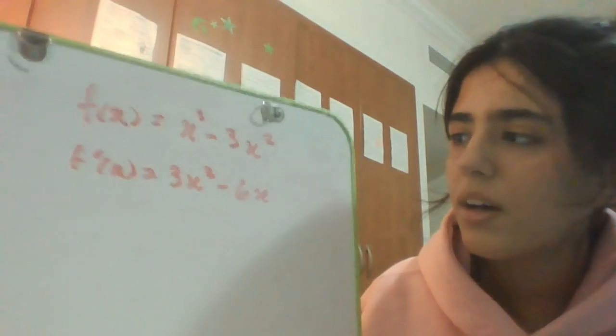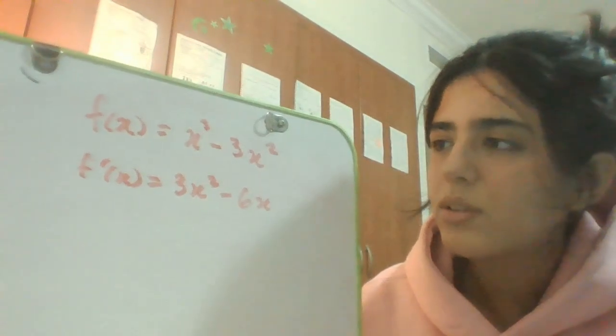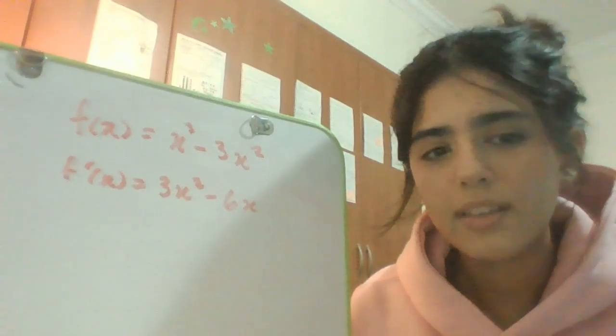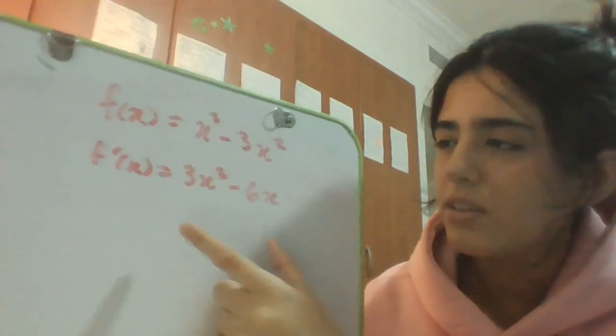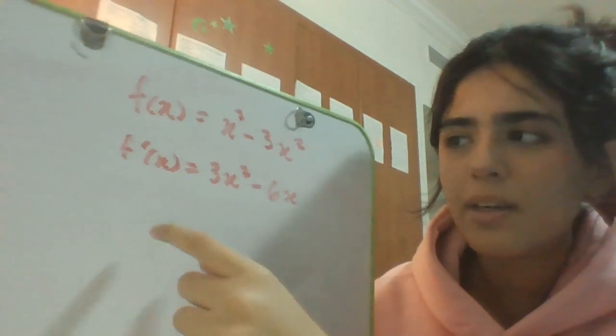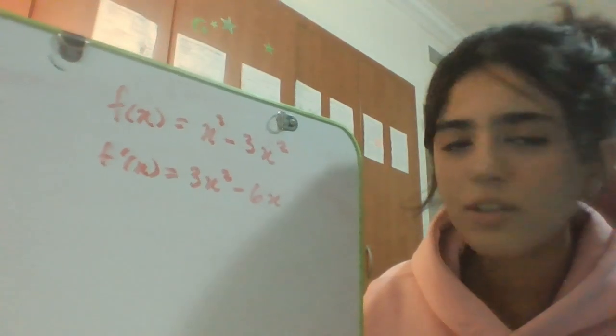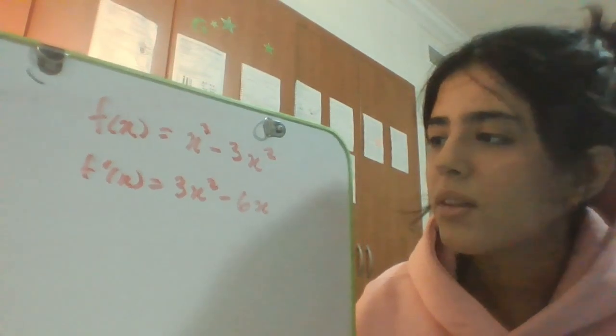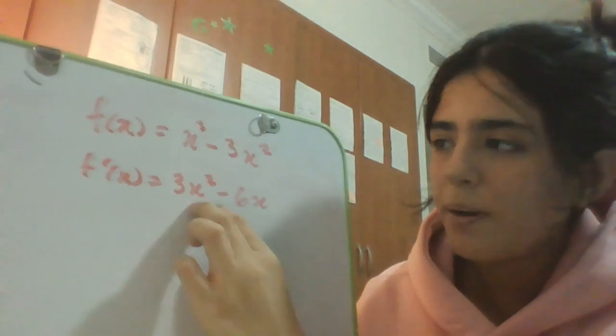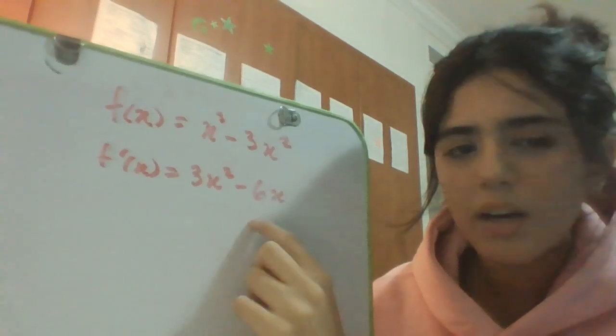Now that I wrote the derivative, I think an easier way for you guys to understand would be to try to factor it and then make it equal to zero so that you can find your critical numbers easier. The way you can do this is check what common term you can take out from both of these terms.